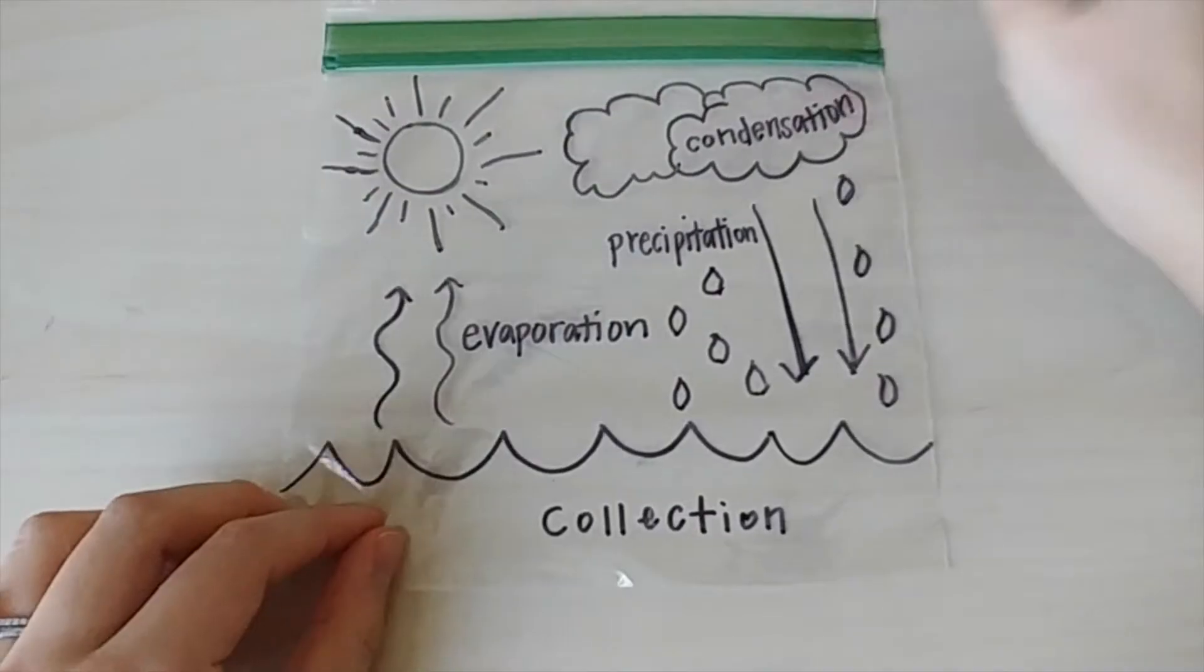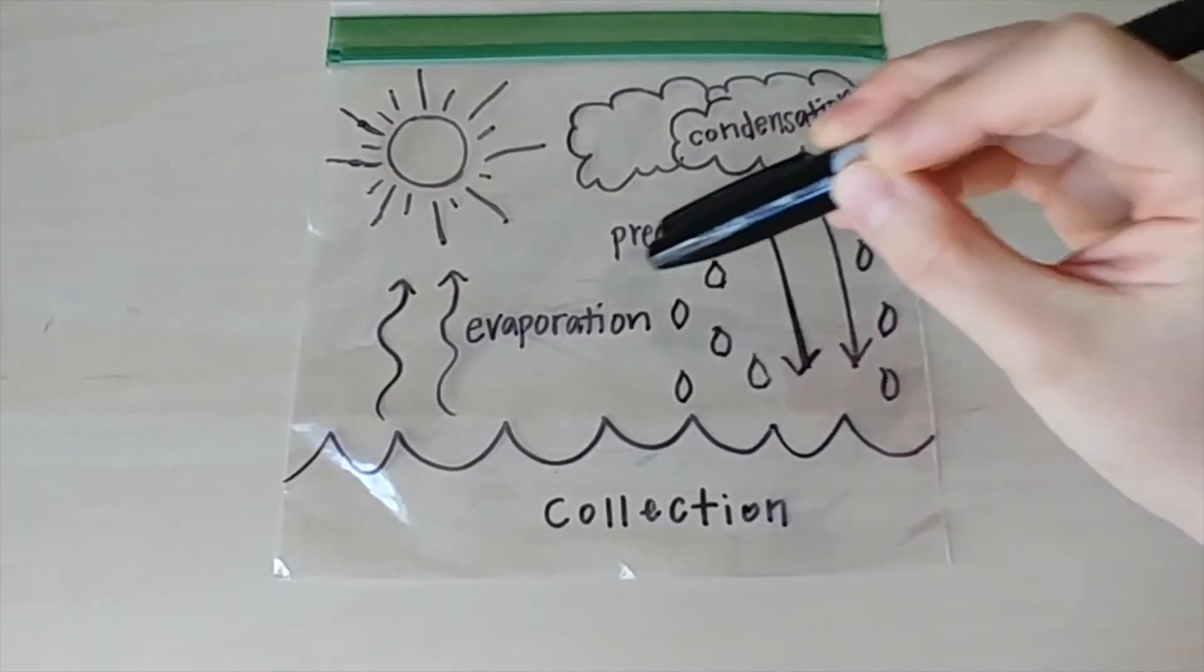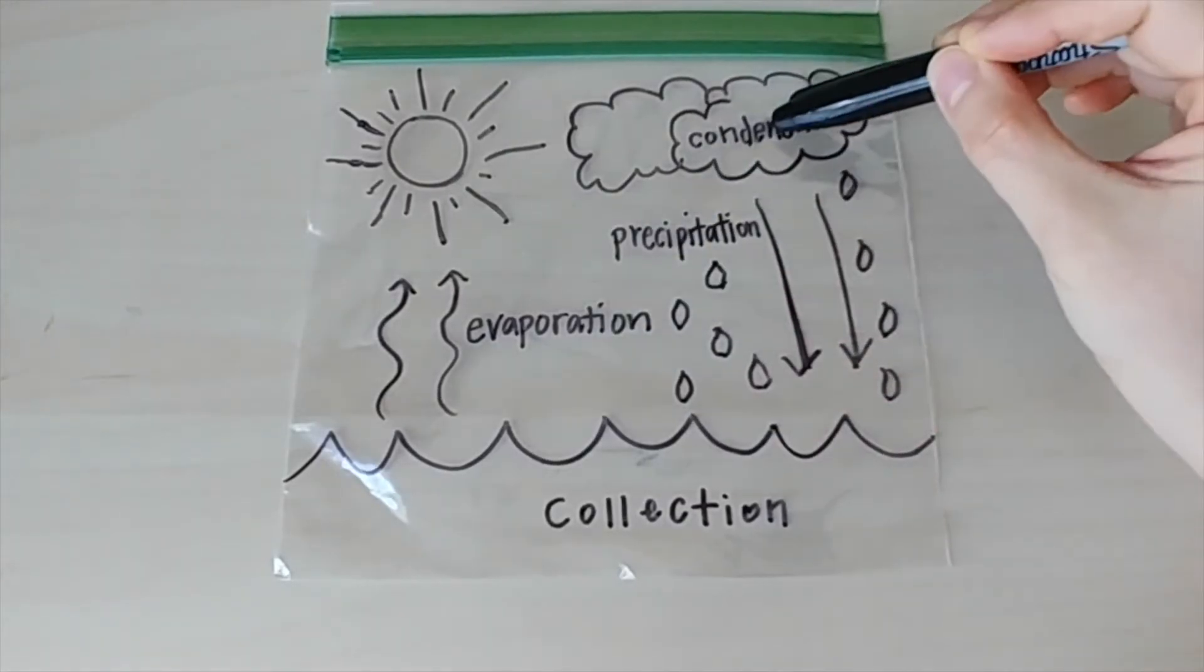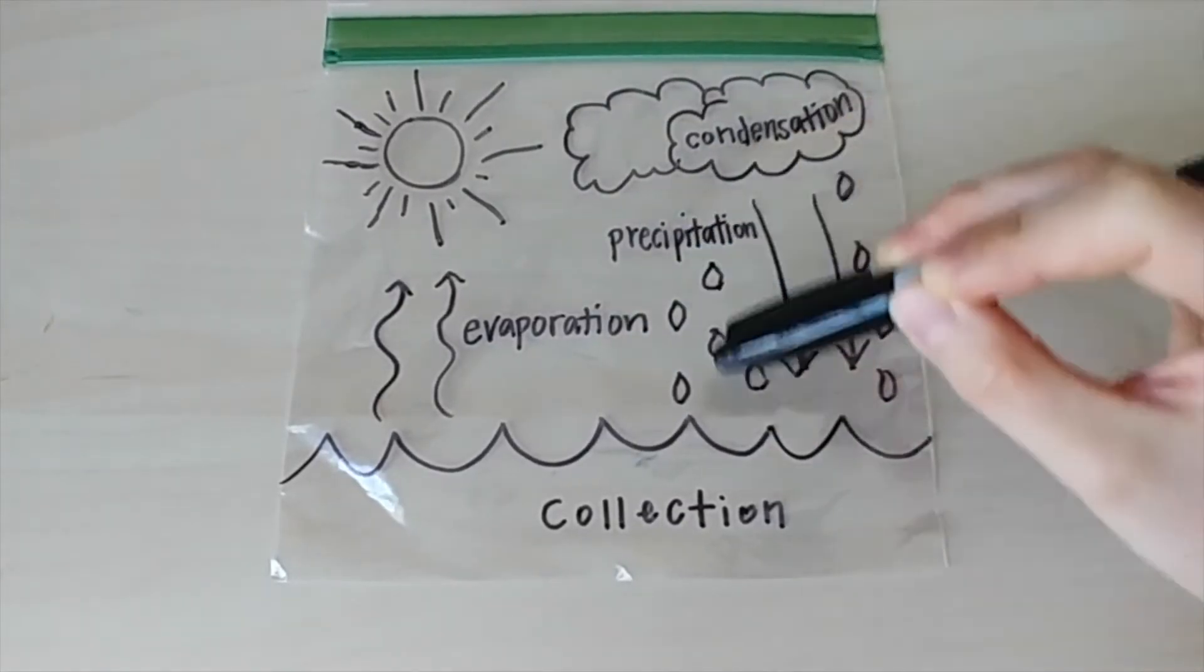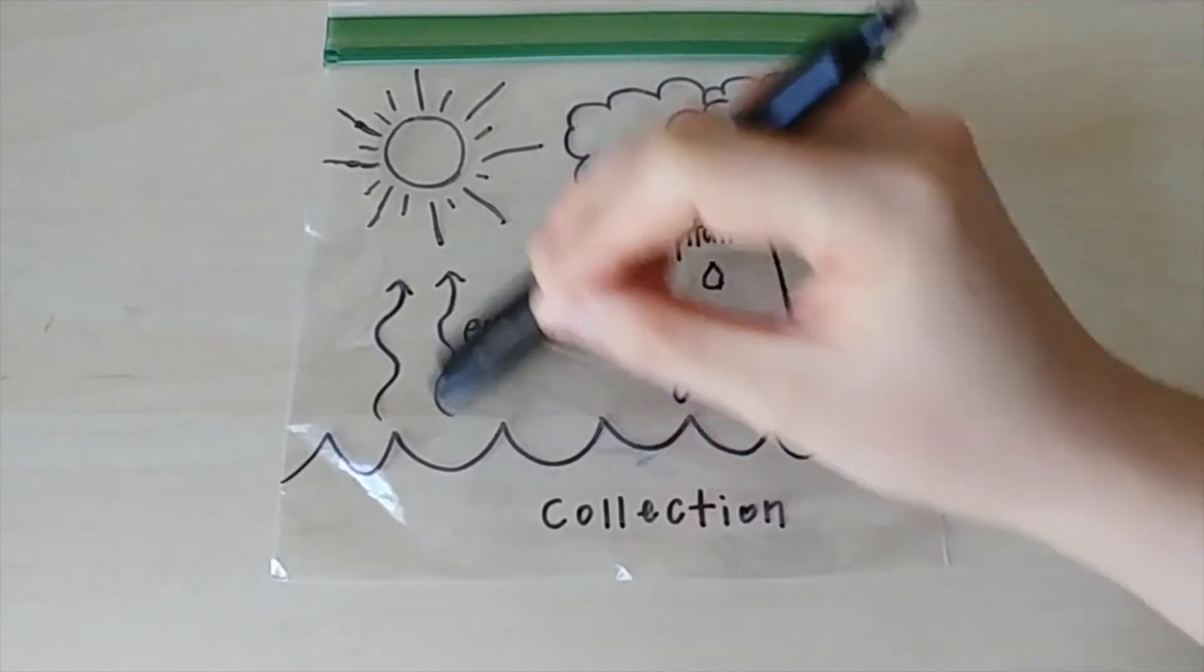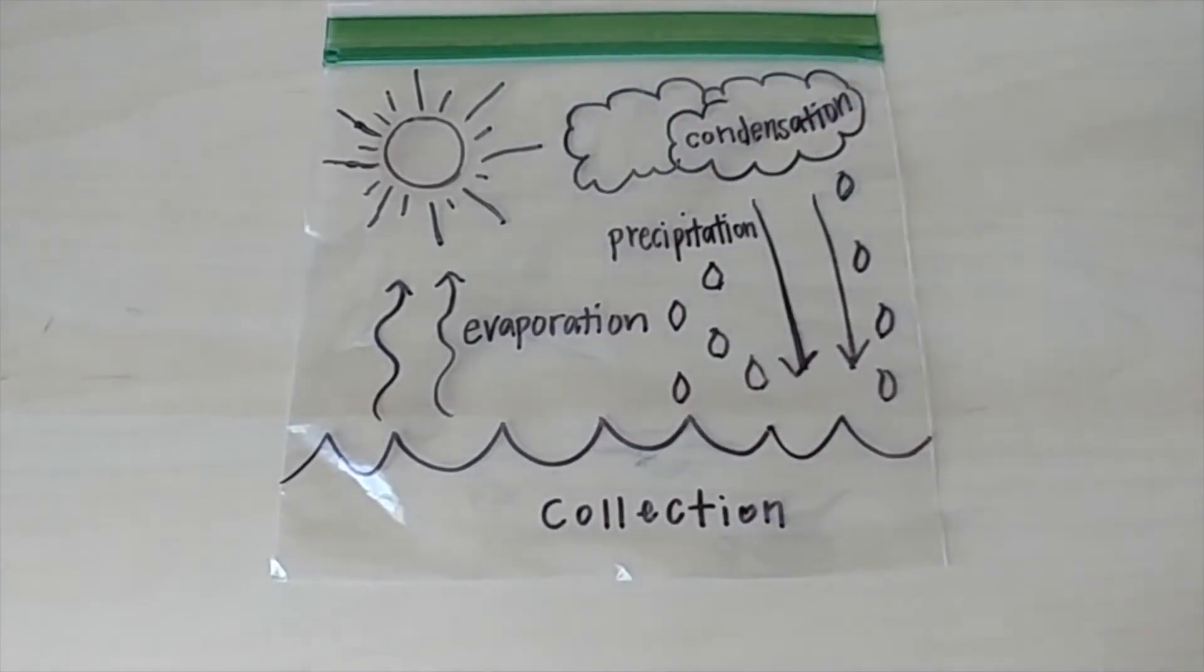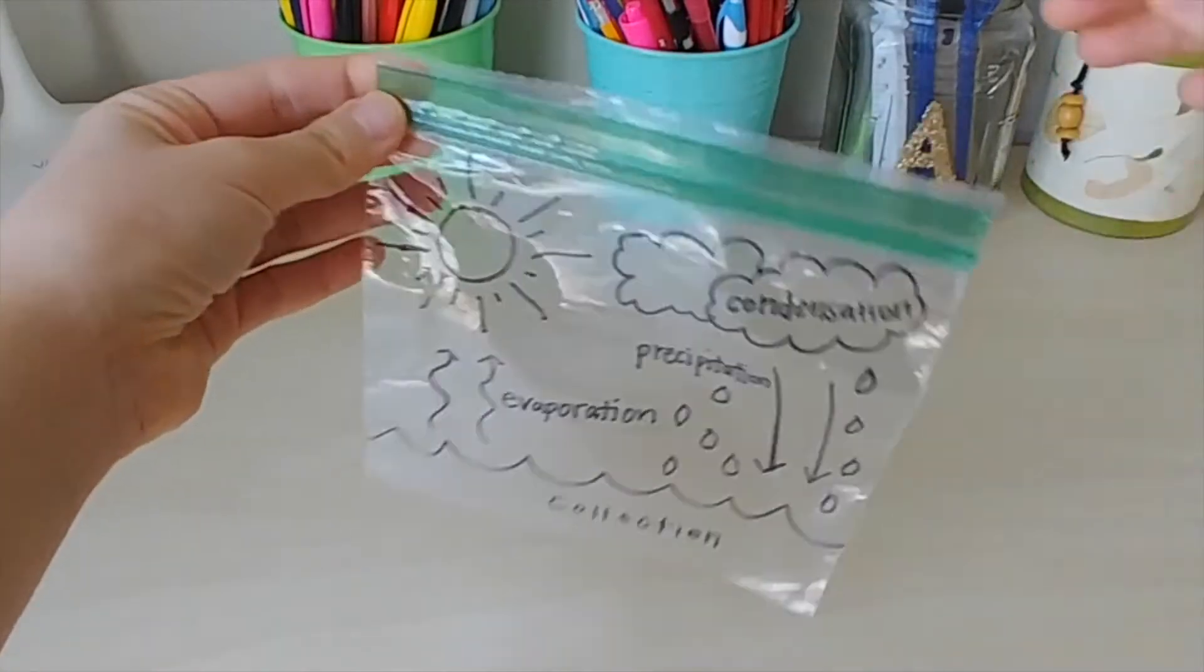And there we have it. We have completed our drawing of collection, evaporation, condensation, and precipitation, which will continue to cycle over and over again to represent how water cycles on Earth.